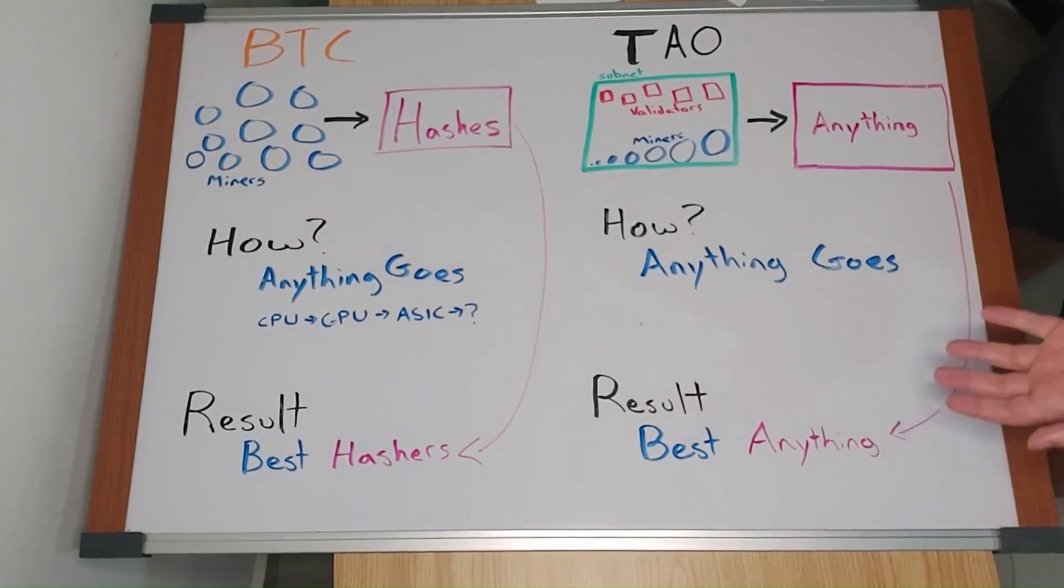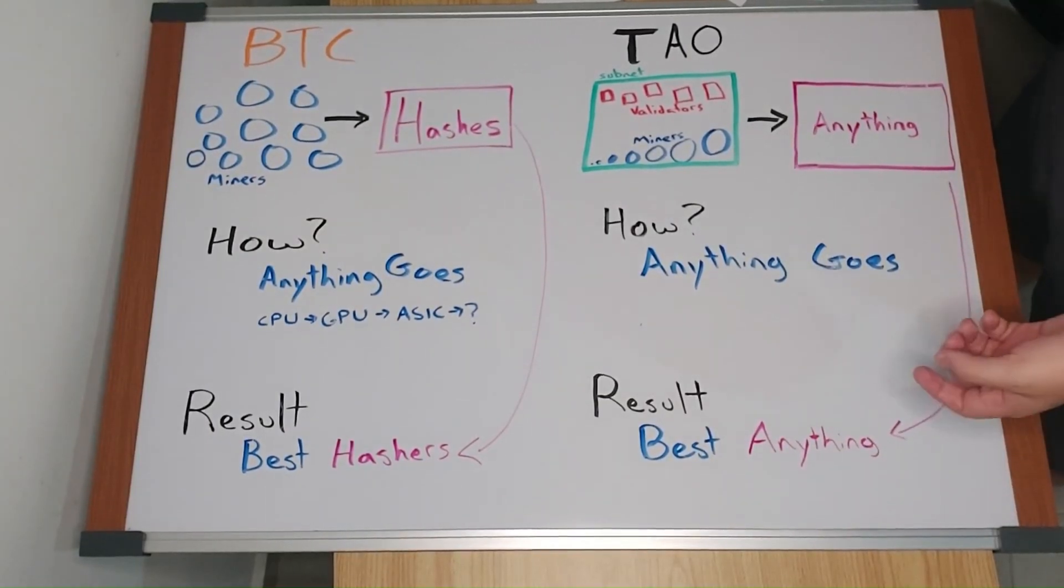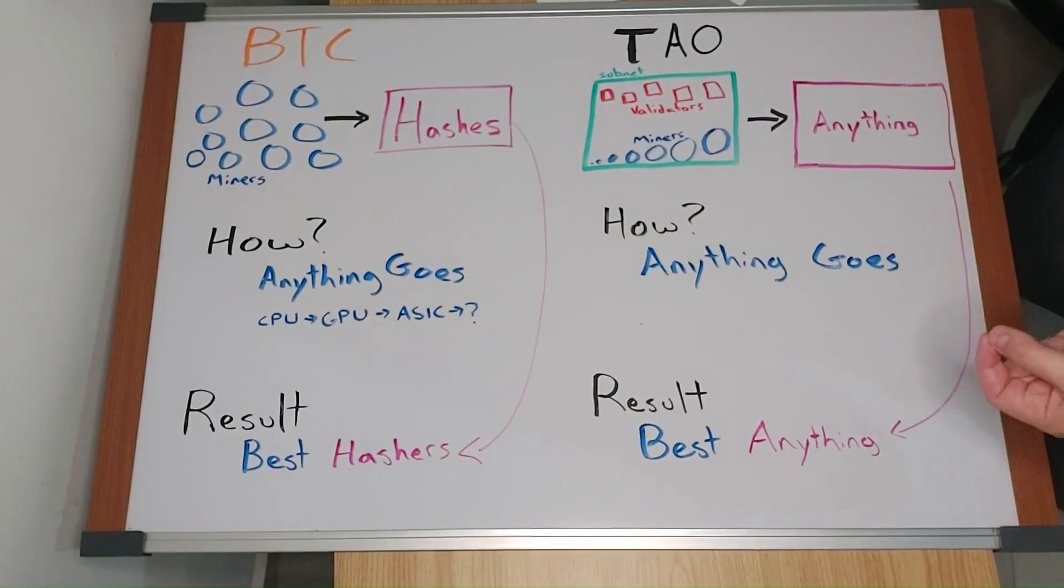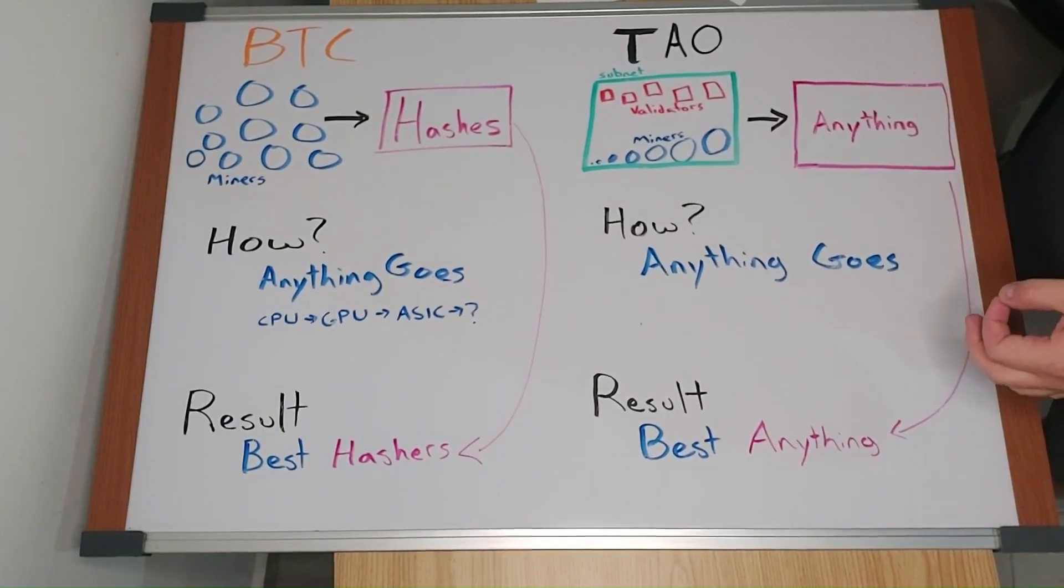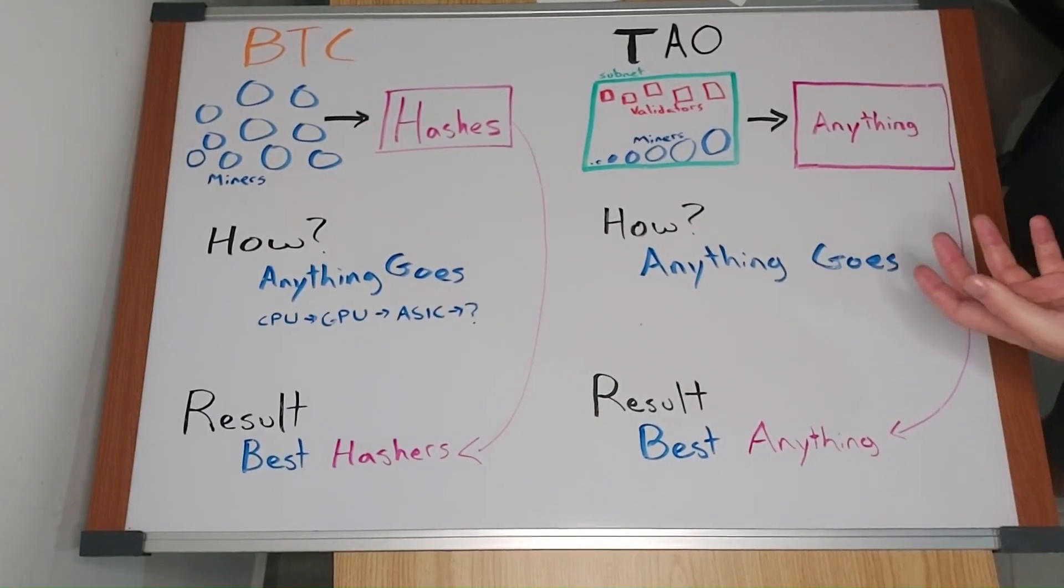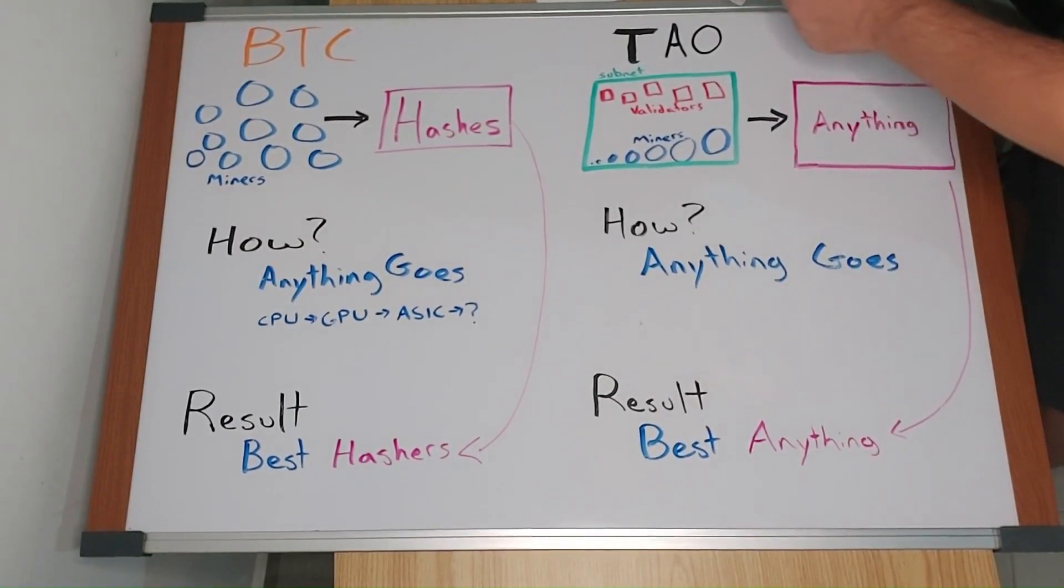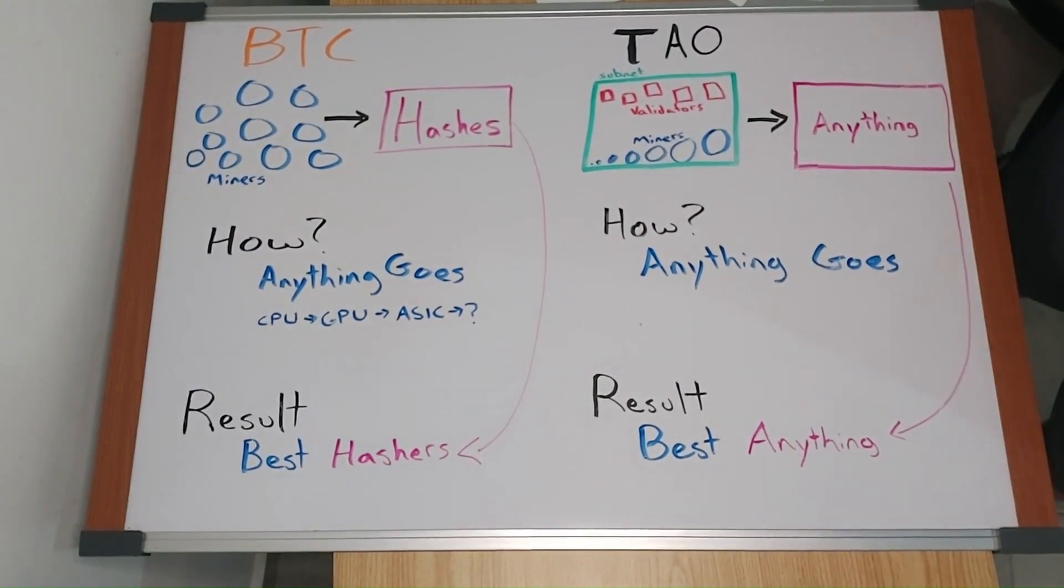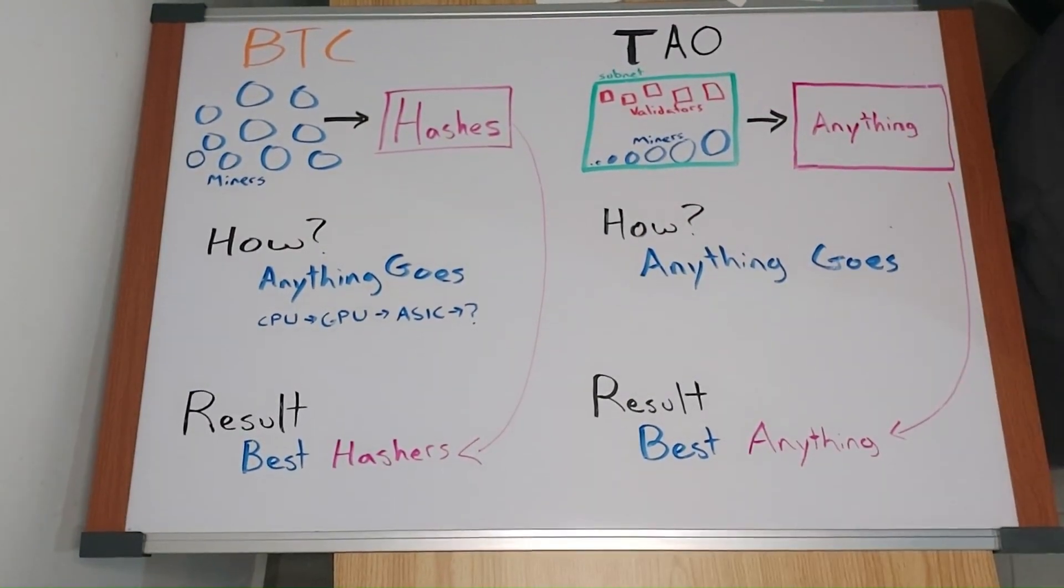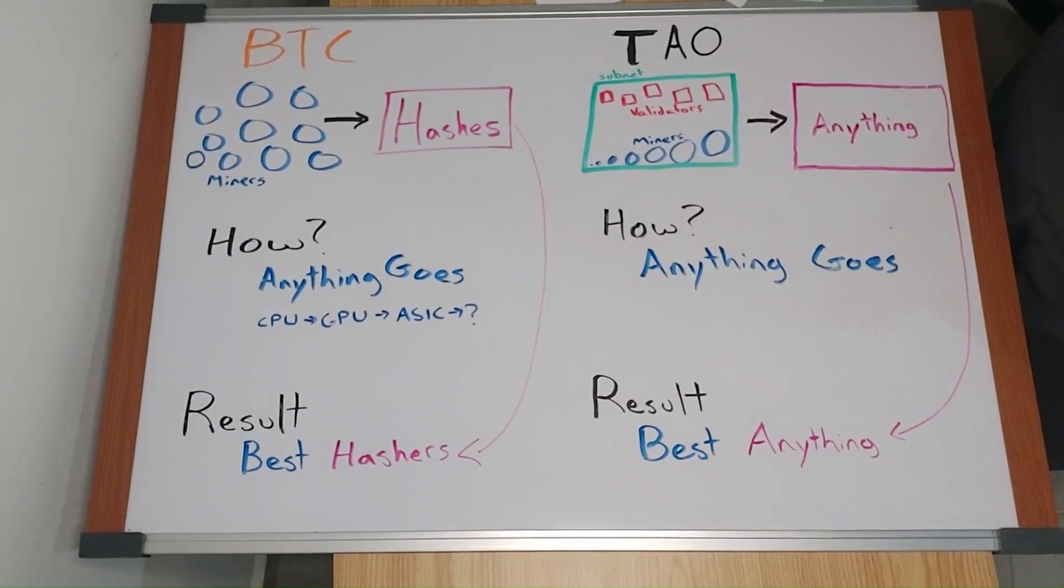How do you get access to this data? Well, you either have to pay a validator or become a validator. How do you become a validator? You have to have a lot of tau. Why do I use this word unimaginably? Because markets produce unimaginable things.